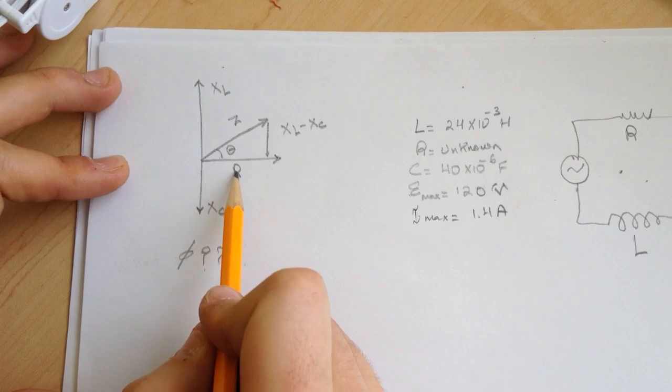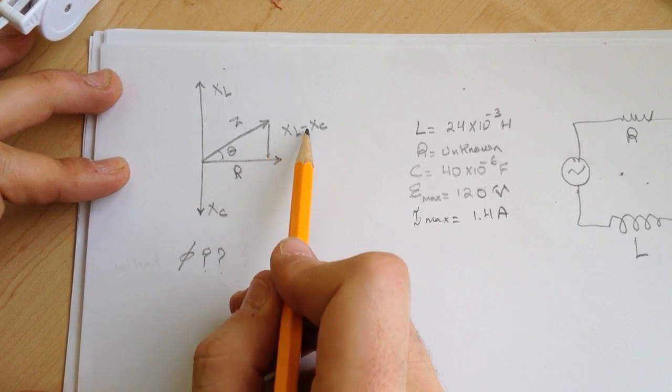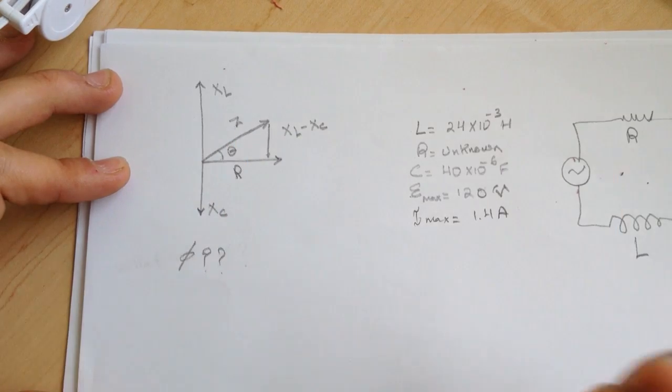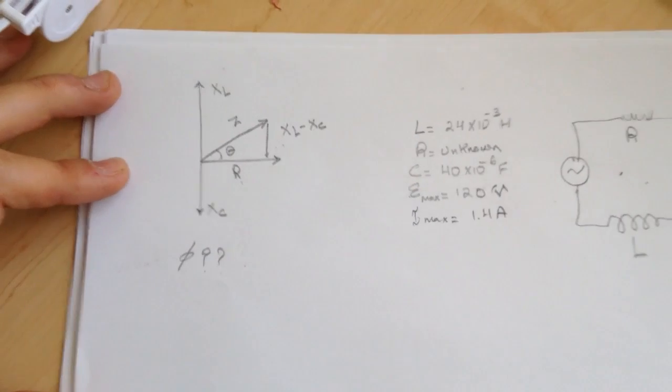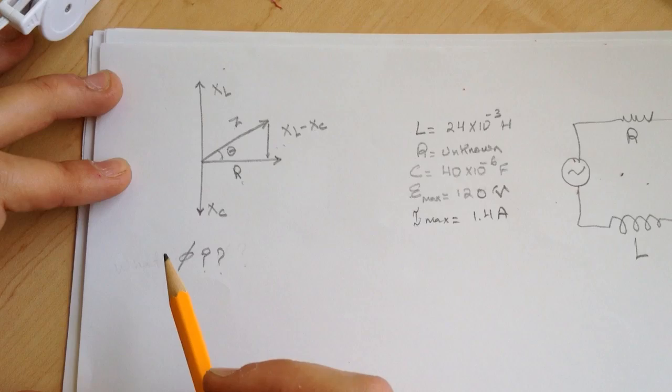So we either find the resistor and the Z, or we find the XL minus XC and Z, or we can find this or this. So we need to find just either two of them. We can use the sine or tan or cosine.